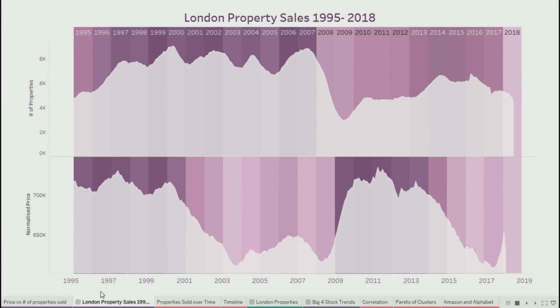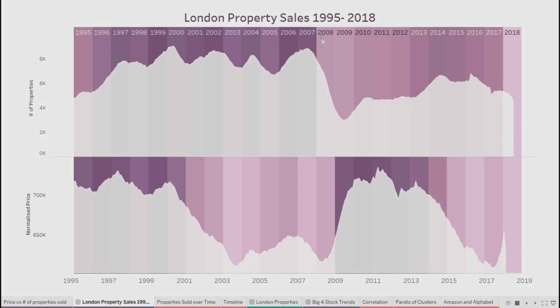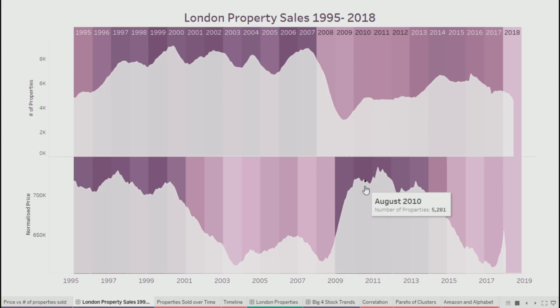Let's look at this data in a slightly different way using transparent backgrounds, new in 18.3. Here in the top viz you can see the number of properties sold over time, and in the bottom viz the normalized price over time. Using your knowledge of what happened in the world, you can see that immediately preceding the financial crisis, there was a huge drop off in the number of properties sold — but that was met with a massive increase in price. That kind of throws the hypothesis that price is driving number of properties sold out the window.